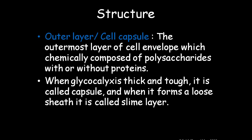The outermost layer of the cell envelope has a chemical composition of polysaccharides, with or without protein — it might or might not contain protein. When the glycocalyx is thick and tough, it is called the capsule. When it forms a loose, seed-like structure it is called the slimy layer. Some bacteria may have this slimy layer and some may not.